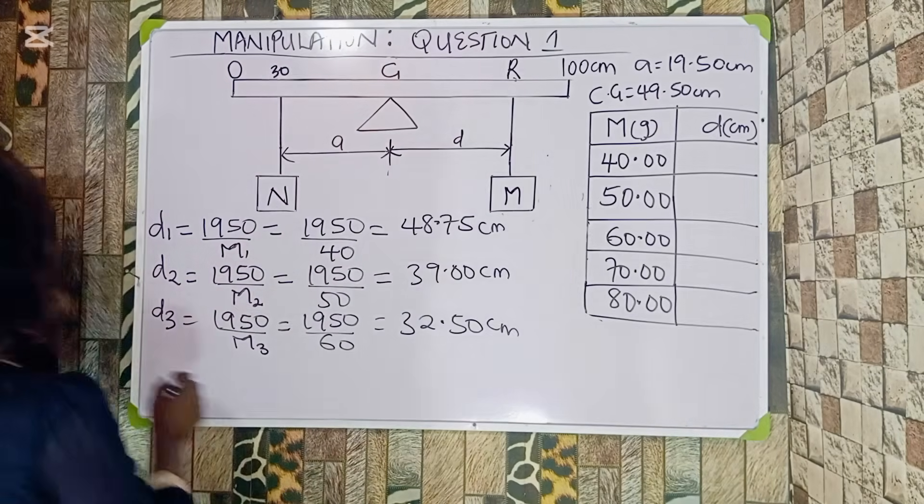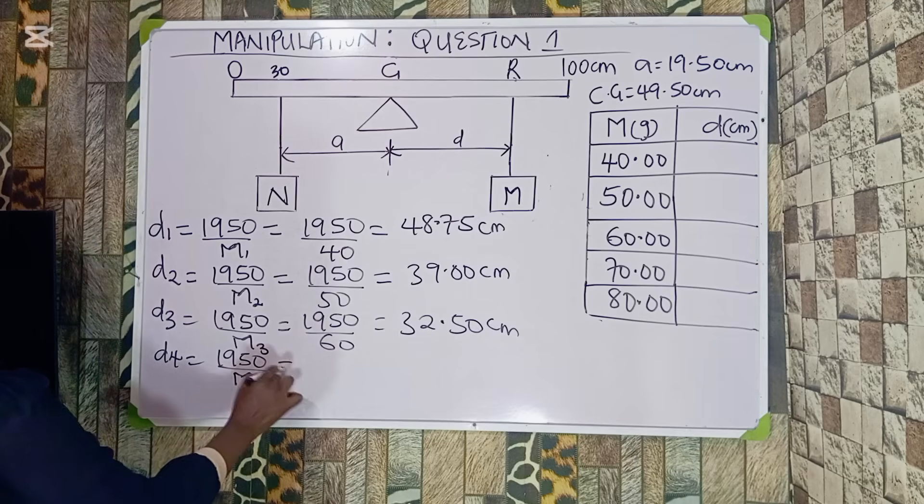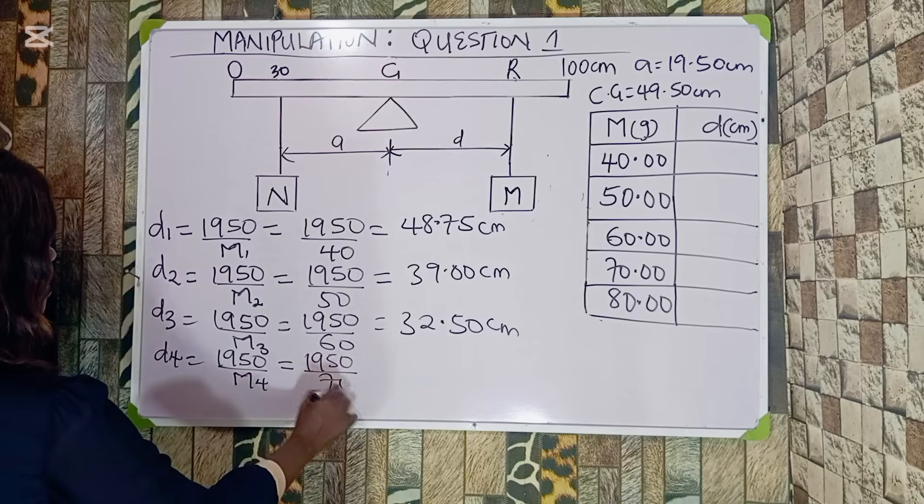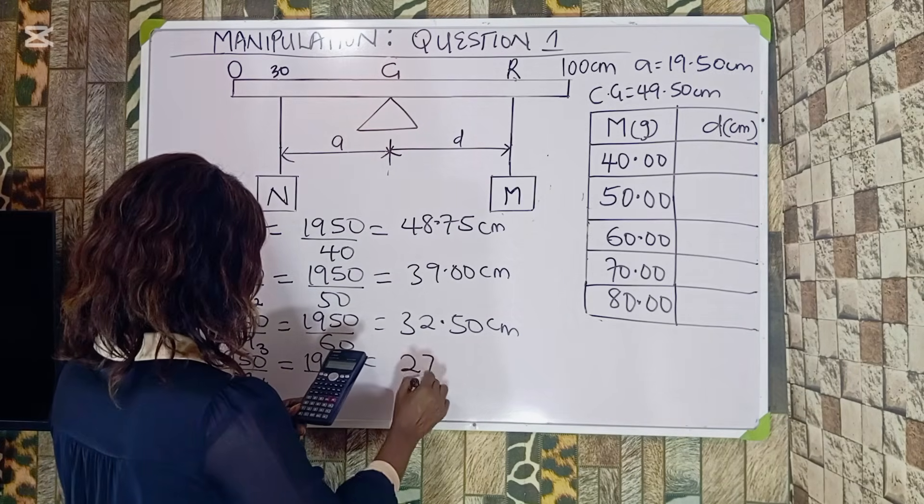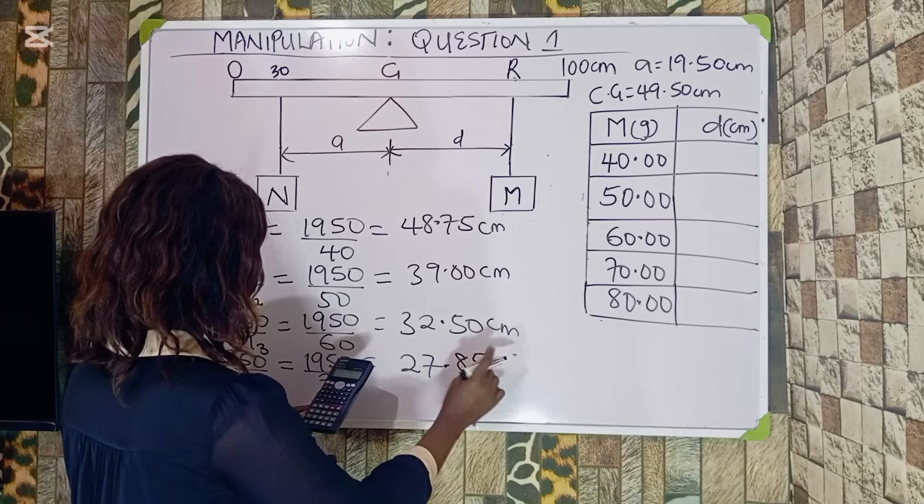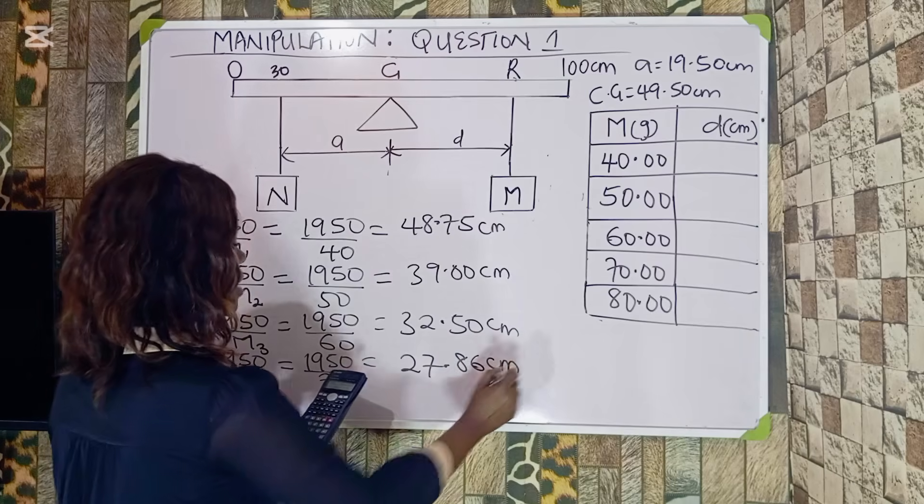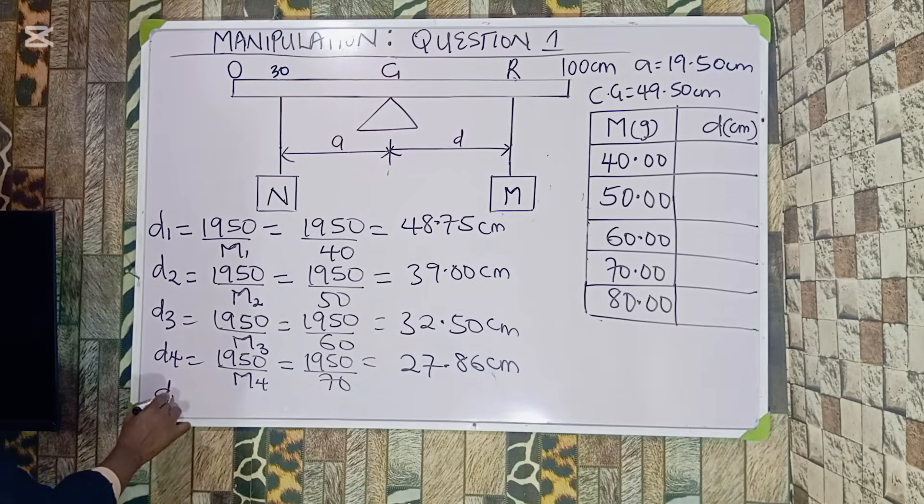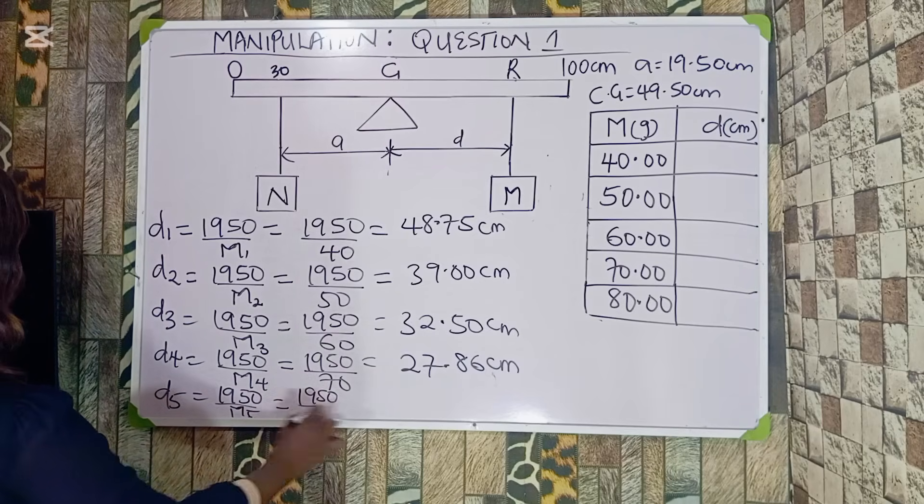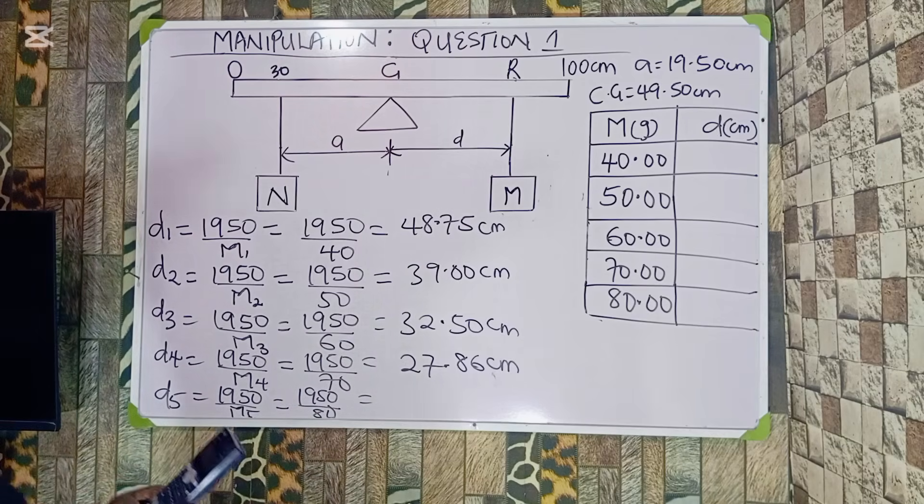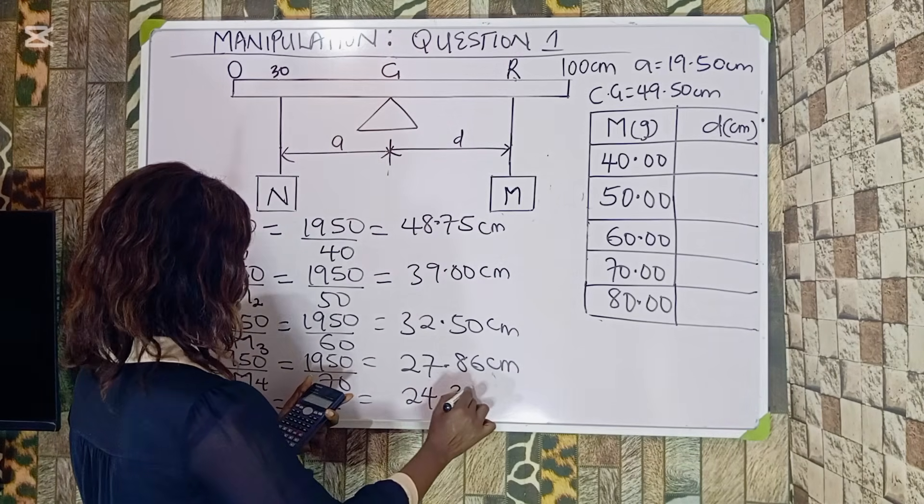The next one, which is D3, equals 1950 over M3, which is 1950 over 60. That is when the mass is 60. So you divide again: 1950 divided by 60 gives me 32.50 centimeters. The next one, D4, equals 1950 over M4, which is 1950 over 70. Simply divide again to get 27.85, approximately 27.86 centimeters.